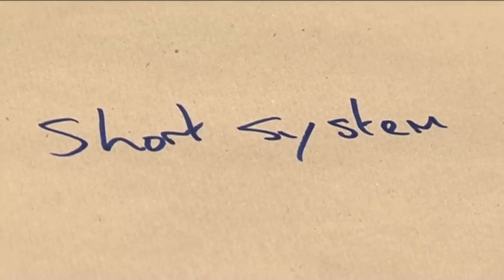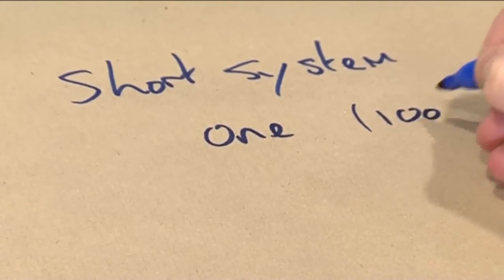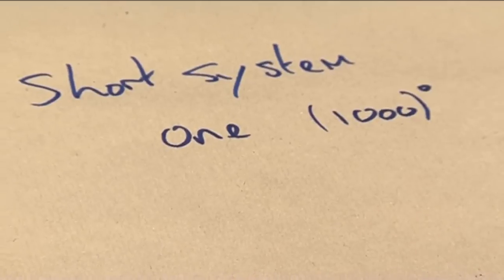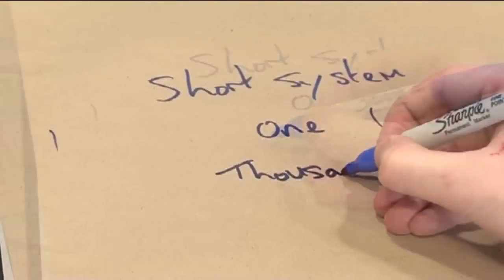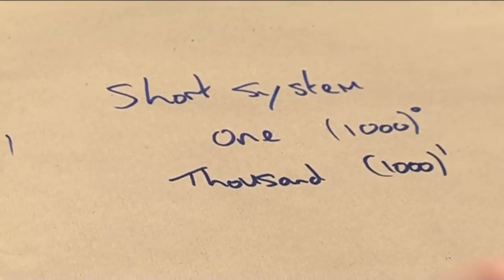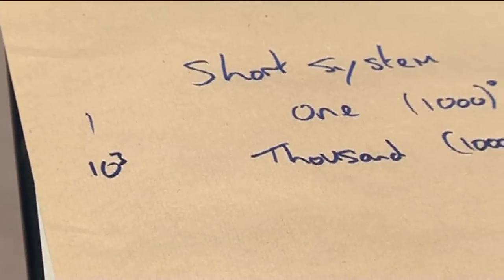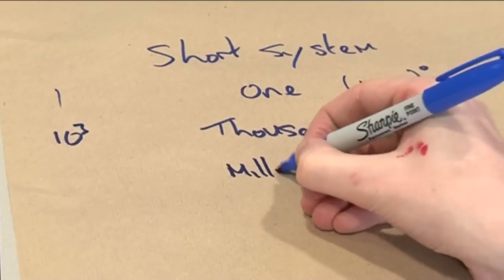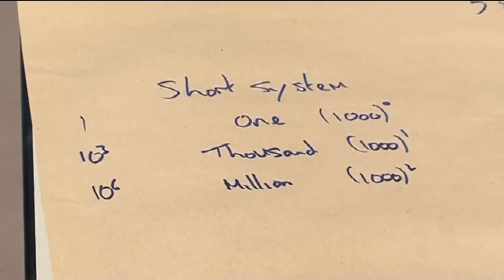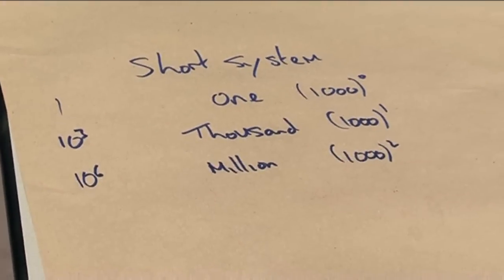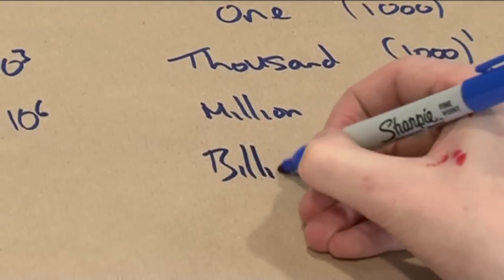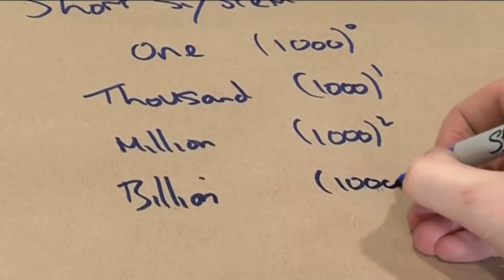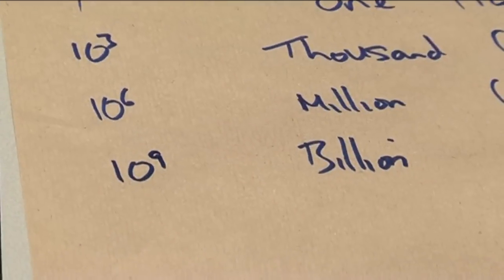The short system is based on powers of 1,000. Starting with the number 1 — that's 1,000 to the power 0. The next step up is 1,000, which is 1,000 to the power 1 — three zeros. After that is a million: 1,000 squared — six zeros. Then in the short system the next one is a billion: 1,000 cubed, which is 10 to the power 9 — nine zeros.